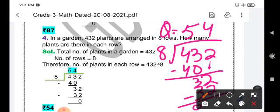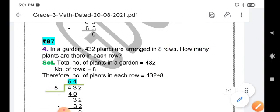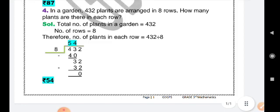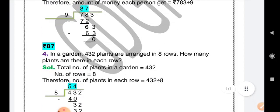That means there will be 54 plants in each row. With this, my dear students, I conclude this class. Take care of yourself. Allah Hafiz to you all. Write these solutions, these word problems, neatly in your notebook.